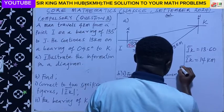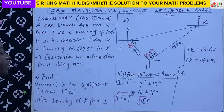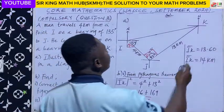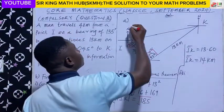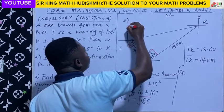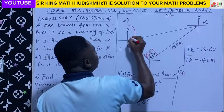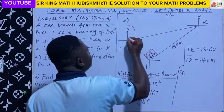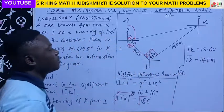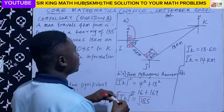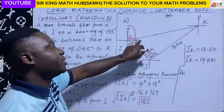Now for part B(ii), we have to find the bearing of K from I. This means the bearing should be measured from point I — starting from the geographical north, moving in the clockwise direction until we reach the line that connects to K. We are looking for this angle, which I'm representing as theta. Inside the right-angle triangle, there is also a missing angle which I'm representing as alpha.